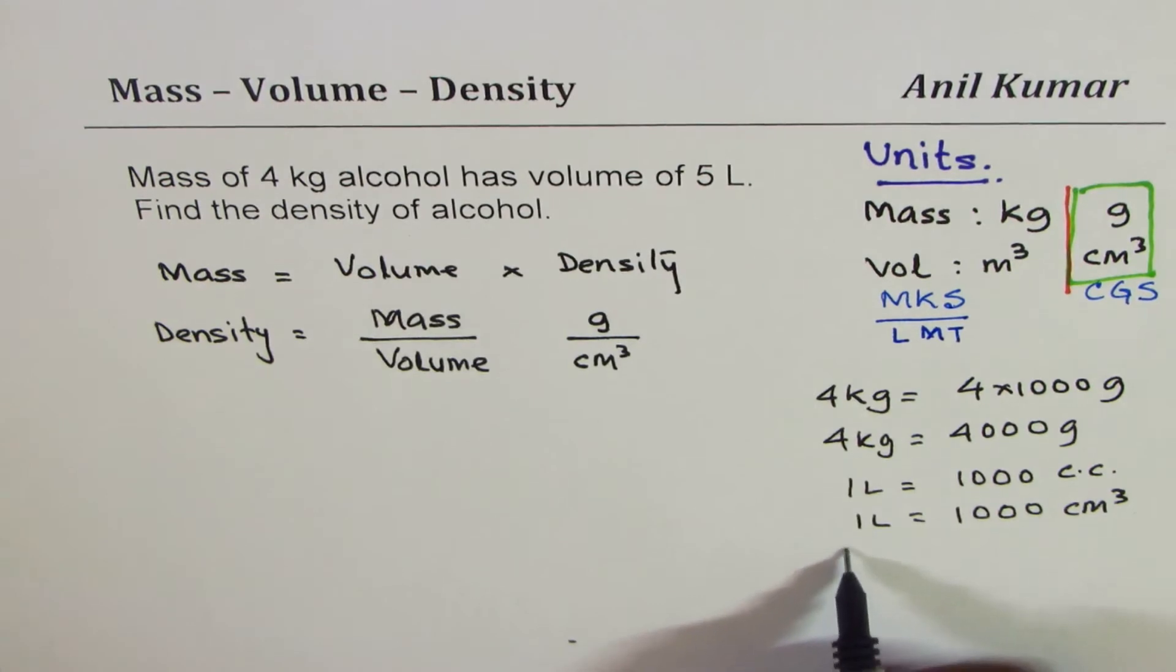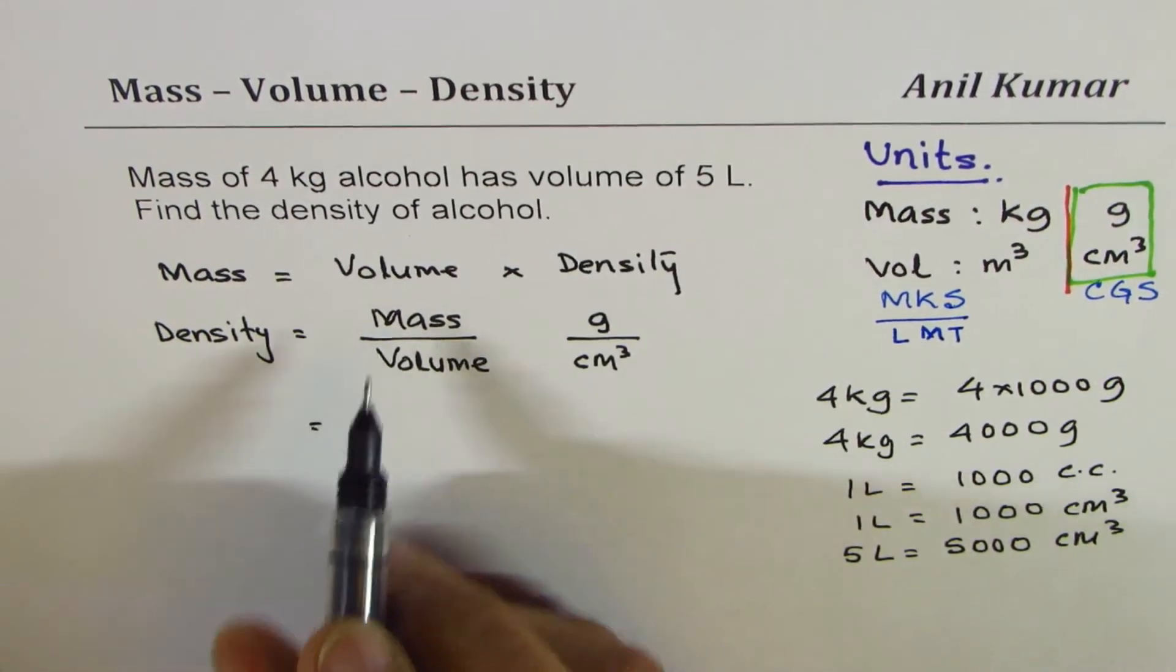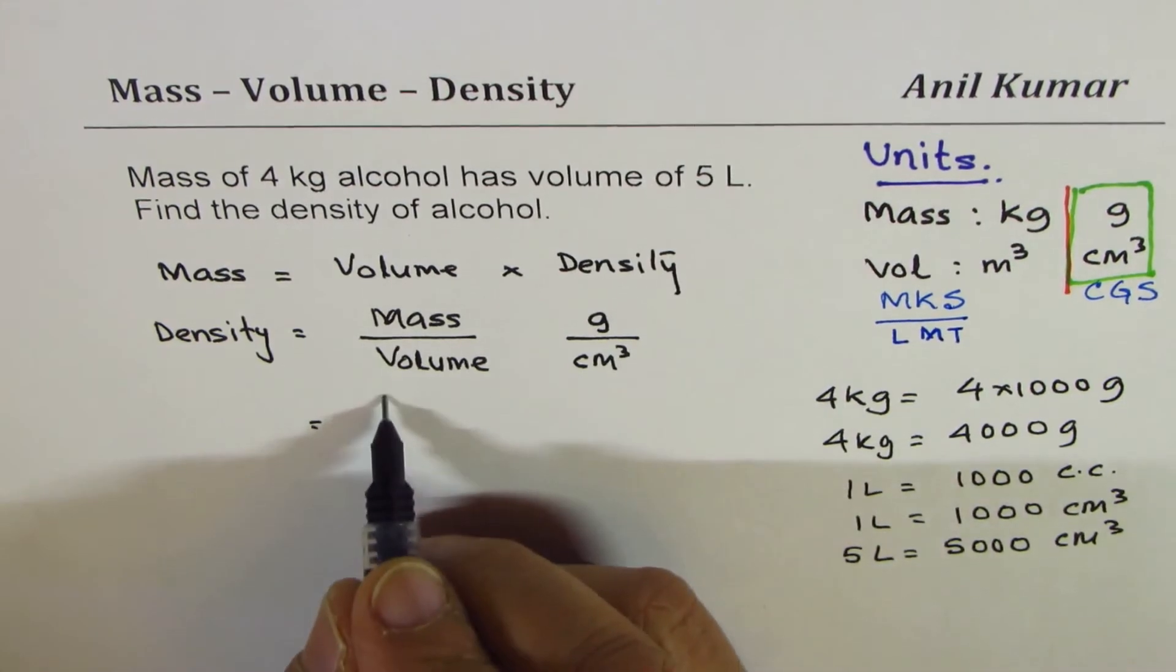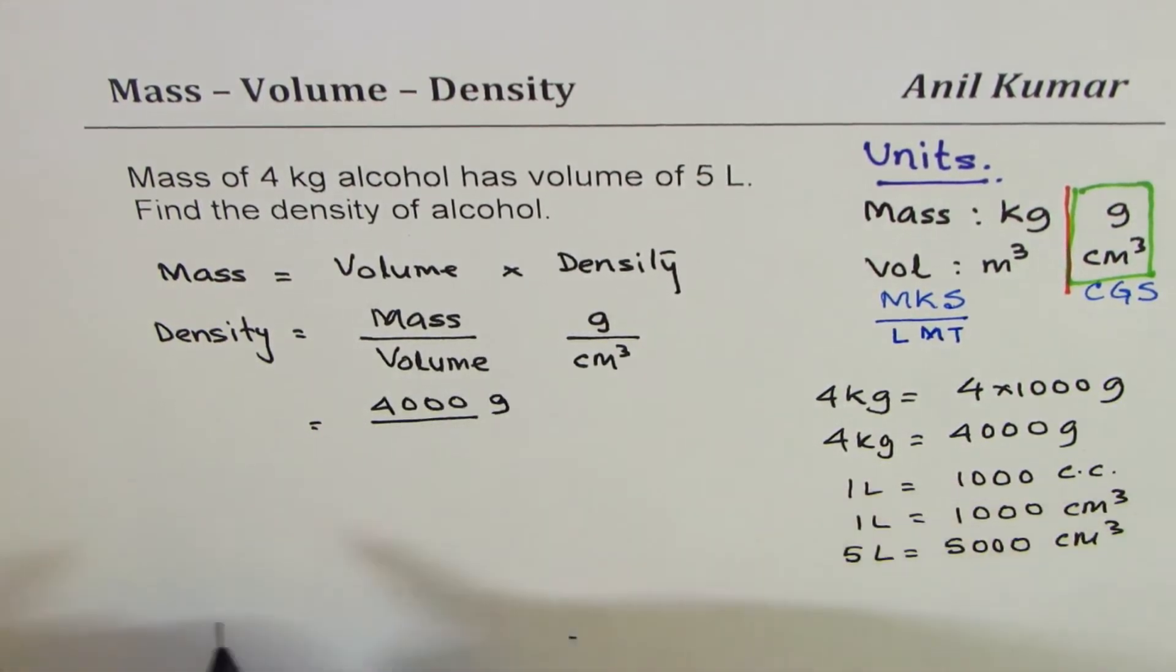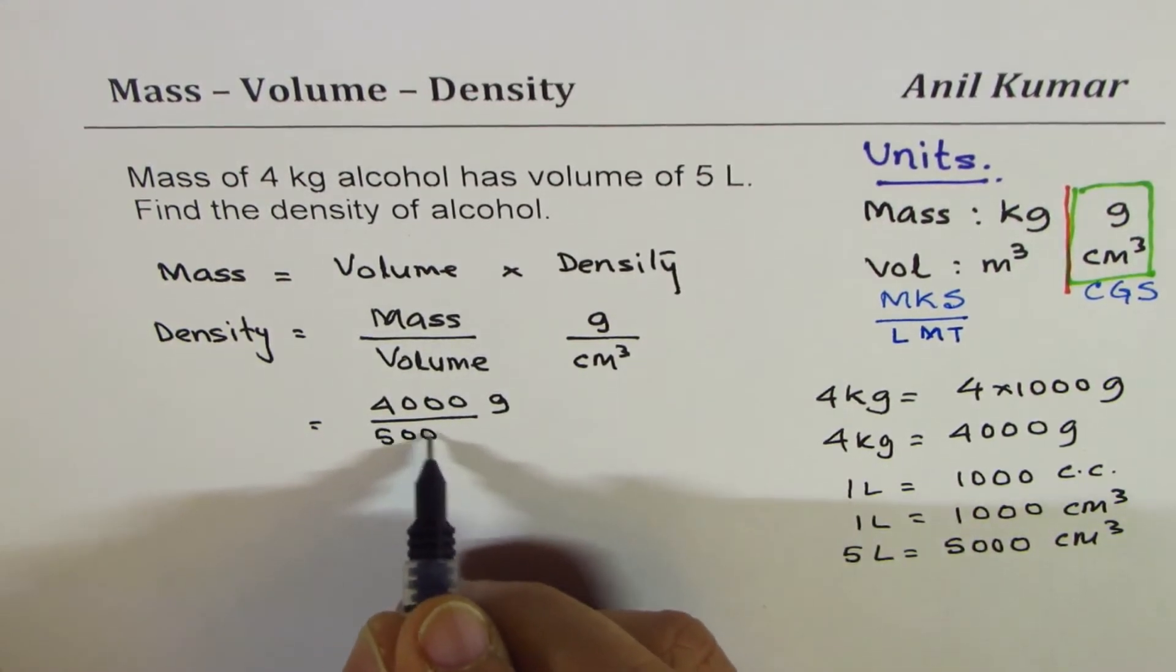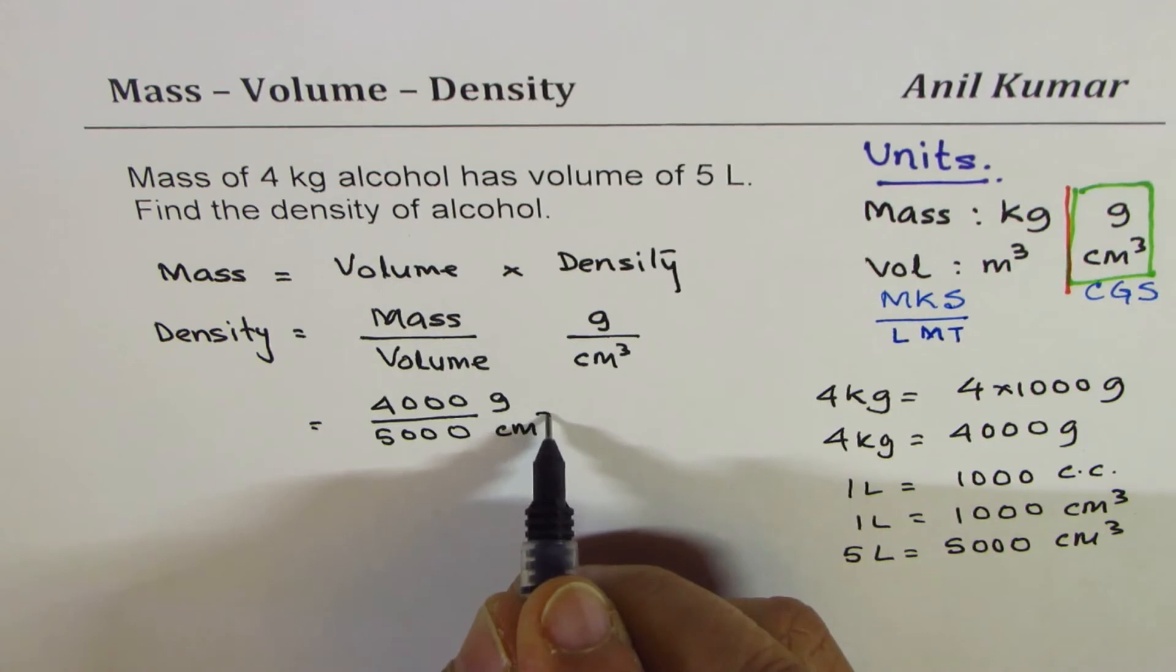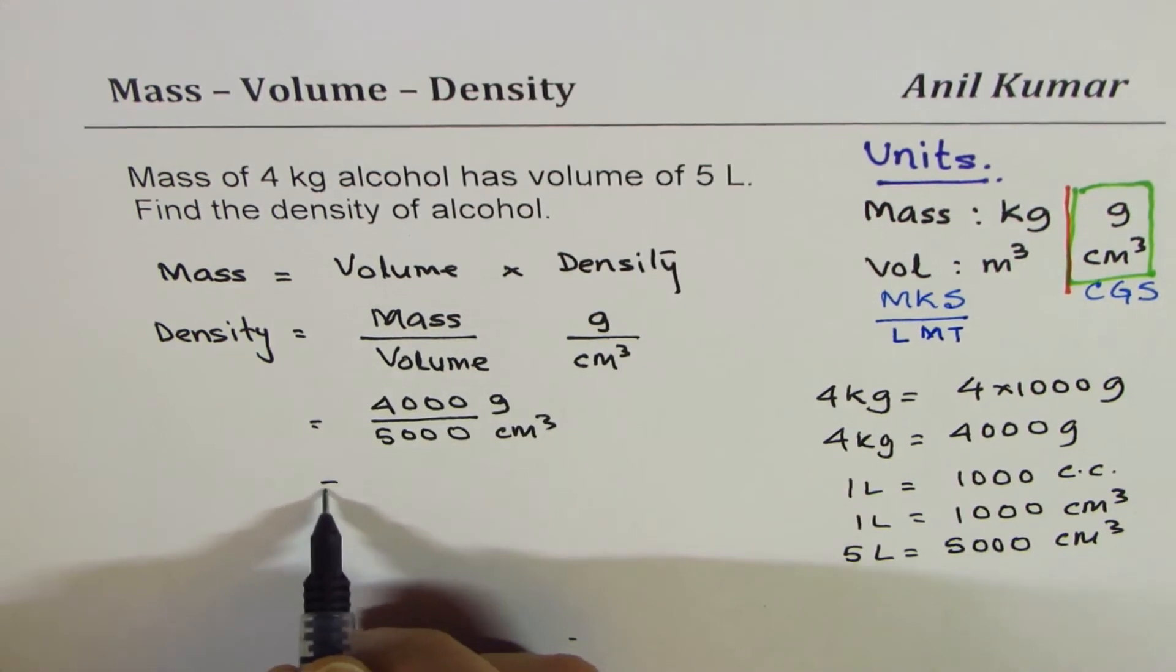We are given five liters, so that means five liters is five thousand centimeter cube. Now it is simple, so density will be mass of four thousand grams divided by volume of five thousand centimeter cube.